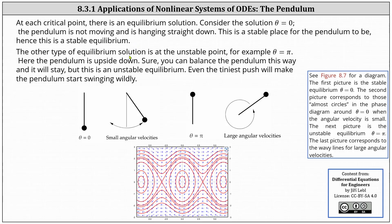The other type of equilibrium solution is at the unstable point, for example theta equals pi. Here the pendulum is upside down. You can balance the pendulum this way and it will stay, but this is an unstable equilibrium. Even the tiniest push will make the pendulum start swinging wildly.